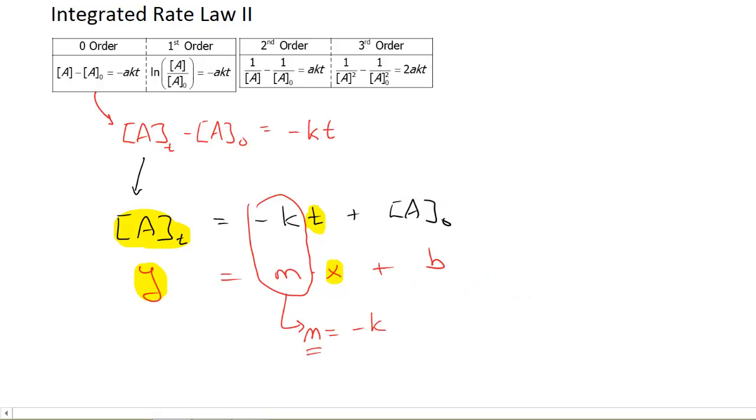If we make a graph of this, concentration of A versus time, I know that my rate constants are always positive. Therefore, this negative sign multiplied by the positive value is going to give me a negative slope. So there's my graph of some zero order data. This would be zero order.